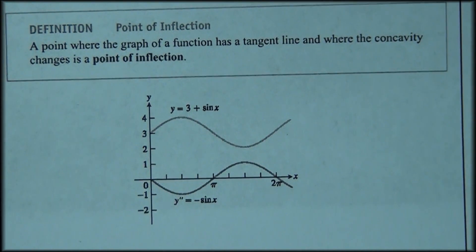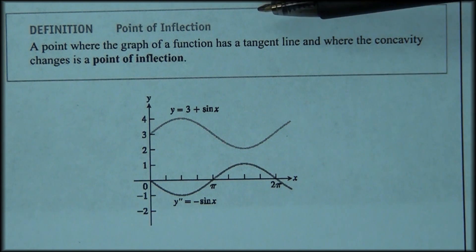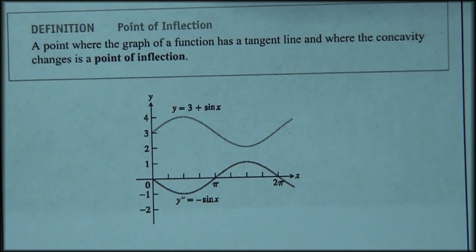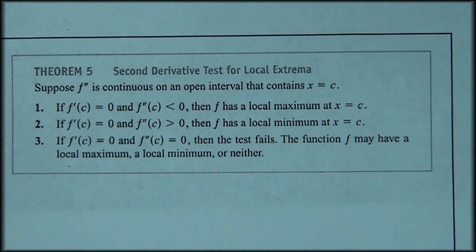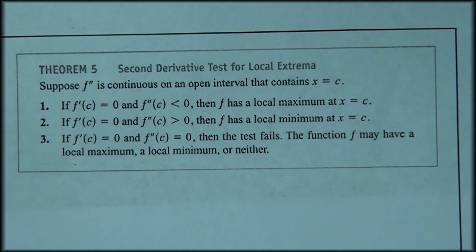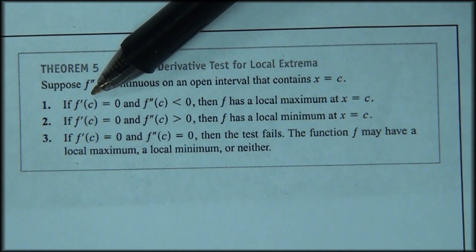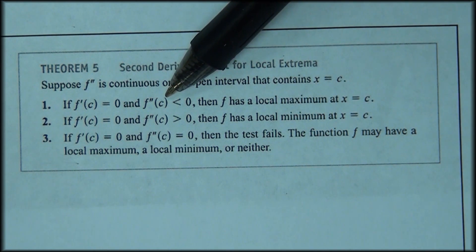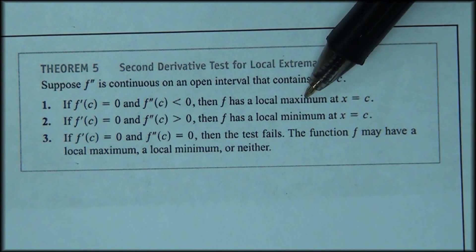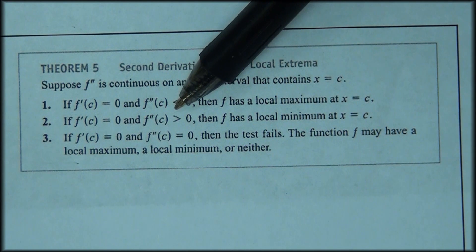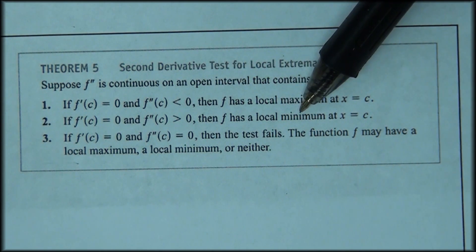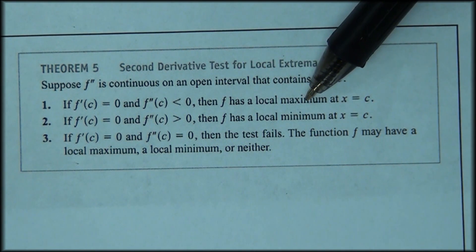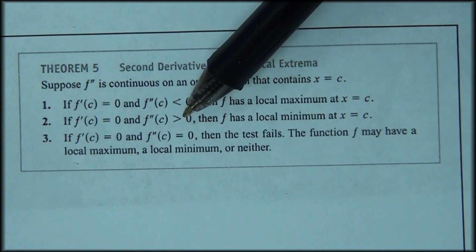A point of inflection is a point where the graph has a tangent line and where the concavity changes. The second derivative test for local extremes states: if the first derivative evaluated at some number equals zero, and the second derivative evaluated at that number is less than zero, we have a local maximum. If the second derivative is greater than zero, we have a local minimum.